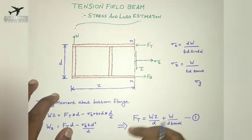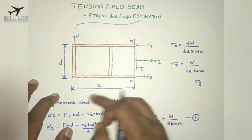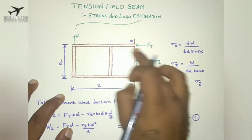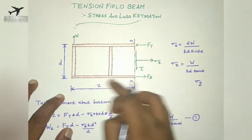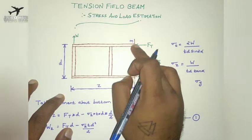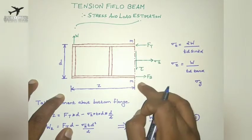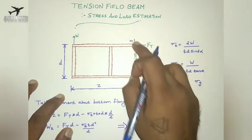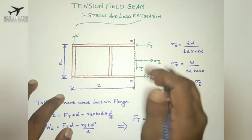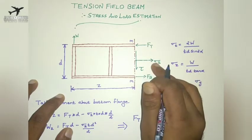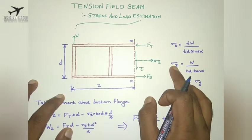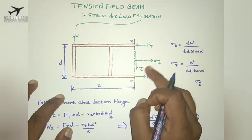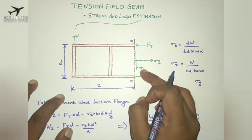To find sigma_y, we consider a portion of the beam of length z, with a plane mm. The upper flange carries a direct load Ft and the bottom flange carries a direct load Fb. On plane mm, we have a direct stress sigma_z — the stress acting in the horizontal direction — and also a shear stress tau. We have already estimated sigma_z and tau.